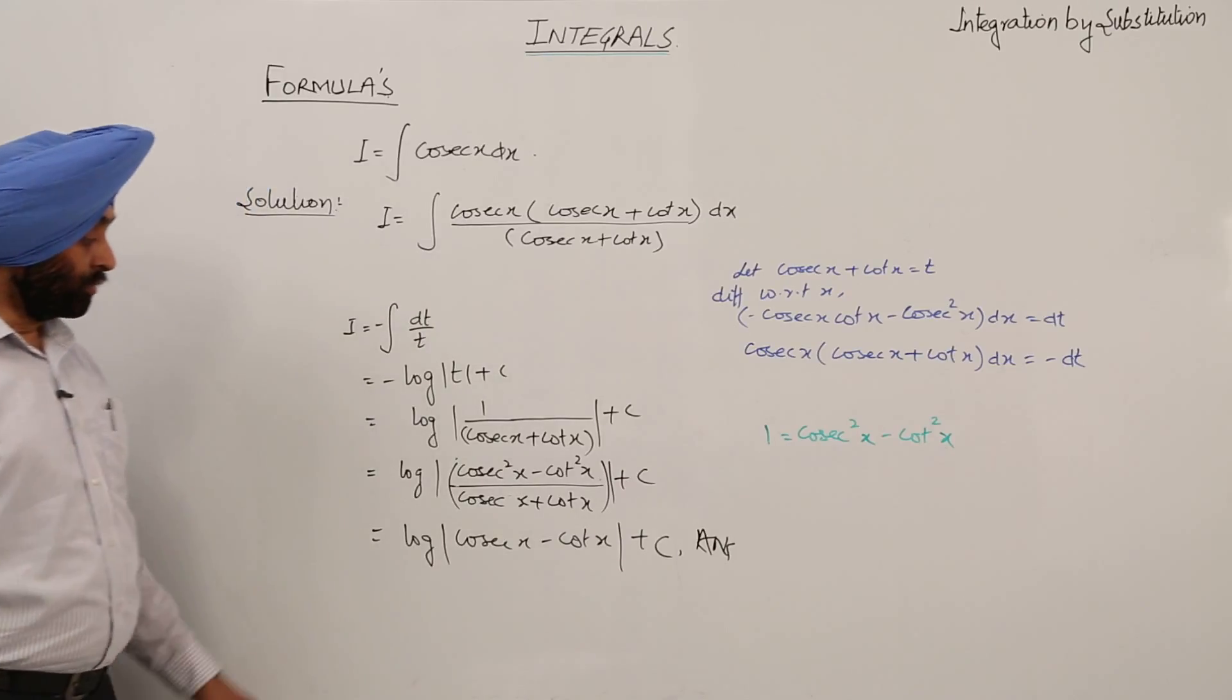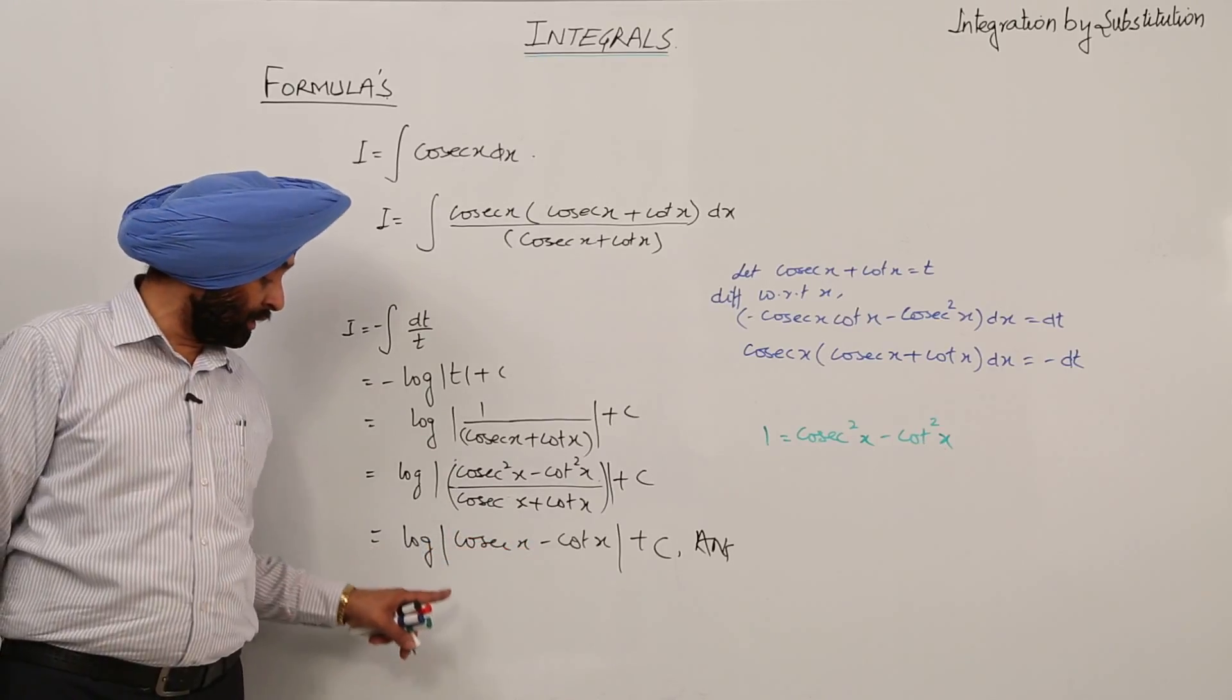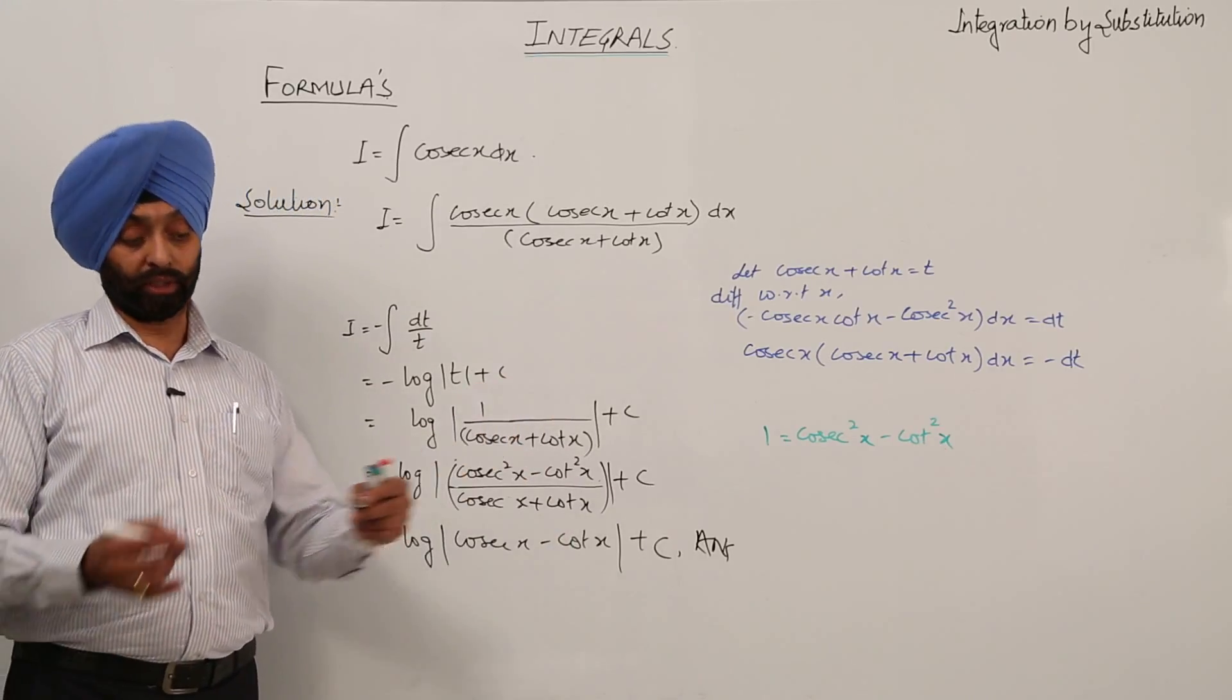What we have used? a square minus b square equals a minus b into a plus b. One term is cancelled and we are left with this as the answer.